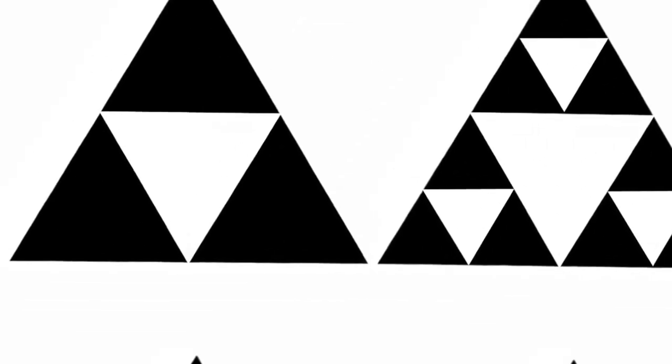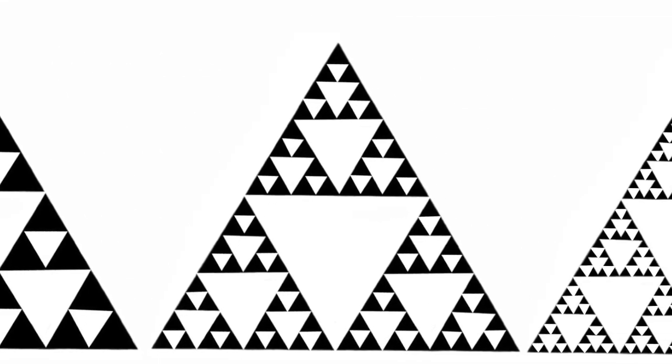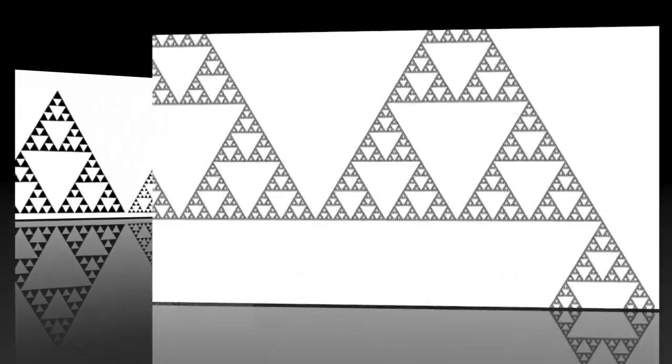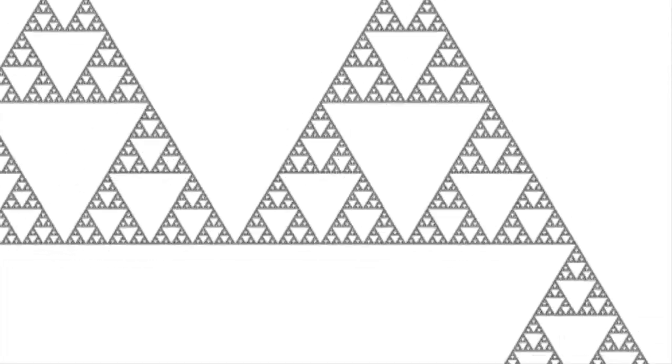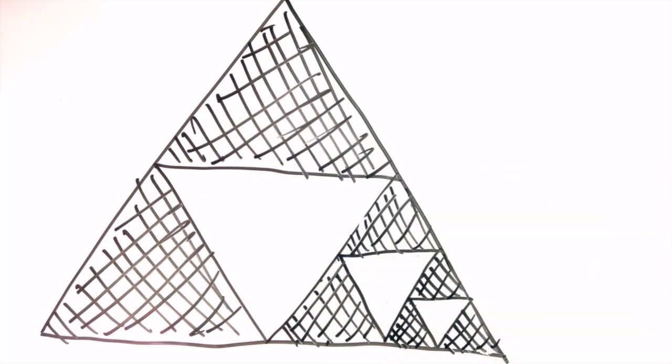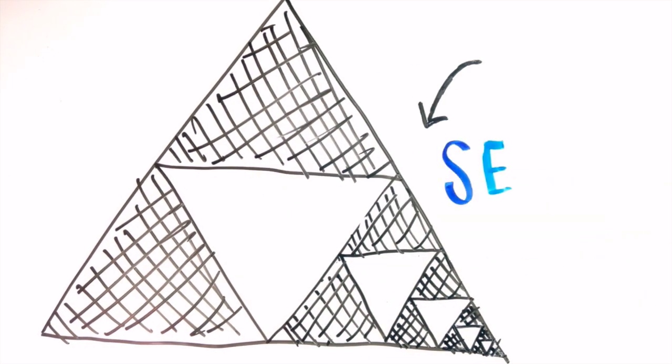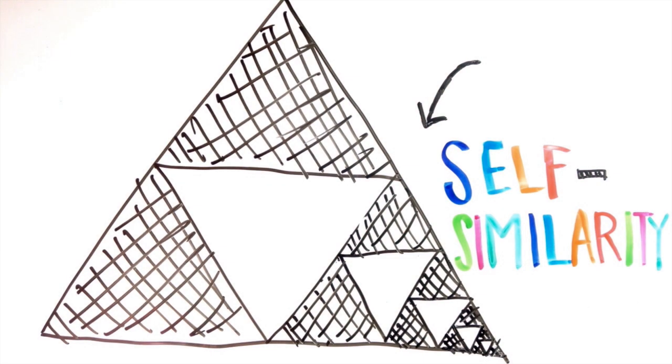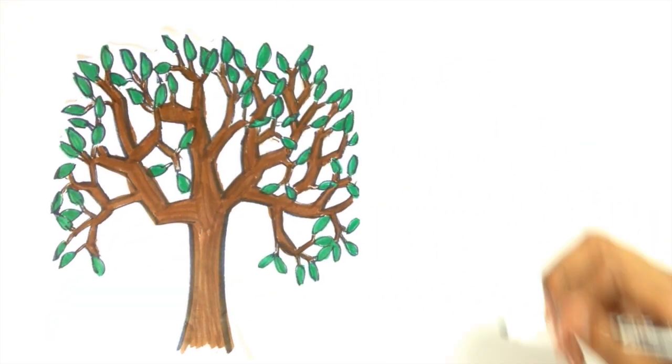Each triangle has an upside-down one inside of it. We may only see about 160 triangles originally, but mathematically there's an infinite number of them. When you find a repeating pattern like this, it's a fractal, and no matter how much you zoom in or out, the object will always look the same. There's an idea called self-similarity: the whole of the fractal looks like a smaller section, then a smaller section of that section looks the same again — the pattern just keeps going.